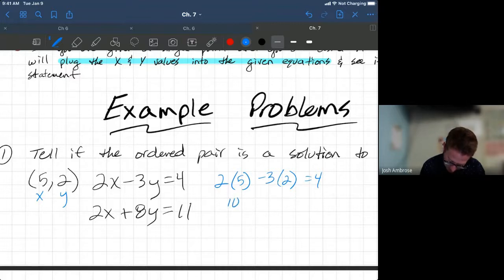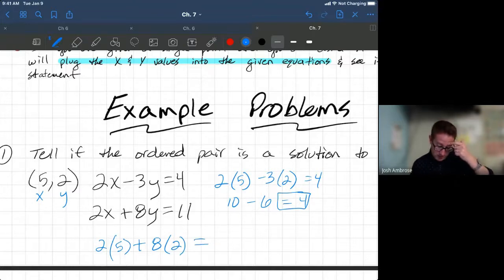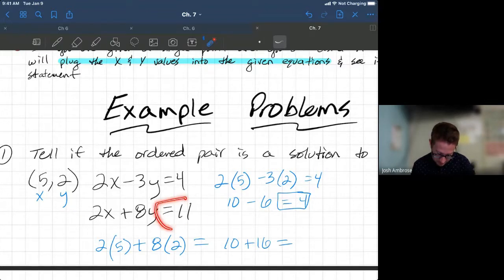We got a 2 times 5 giving us 10 minus a 6. So double check that we plug those in the right way. There's our x, plugged it in, there's our y, the 2 value, plugged it in, and 10 minus 6 does equal 4. So, so far, we're good. So we've got to test the other one. So 2 parentheses 5 plus 8 parentheses 2.